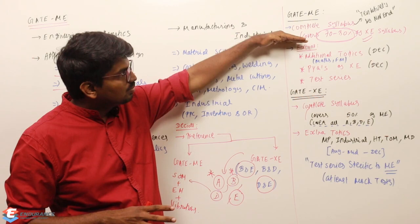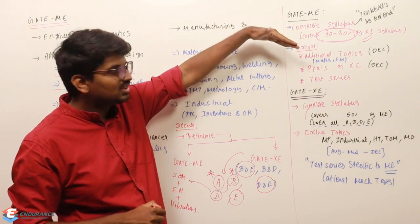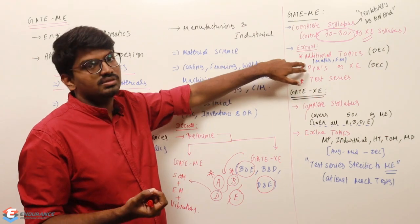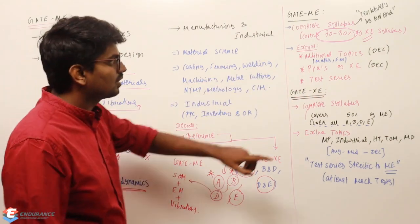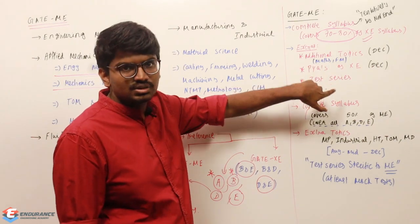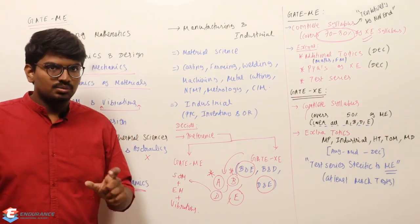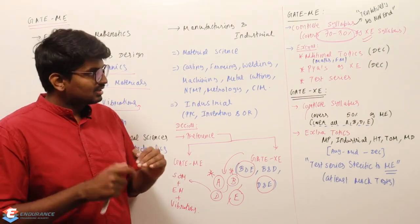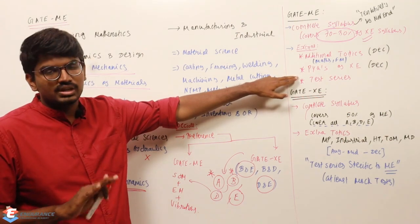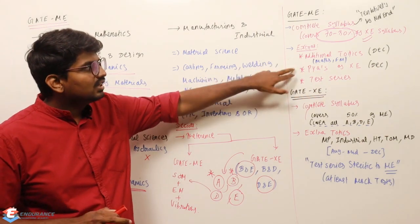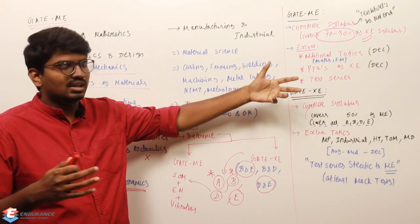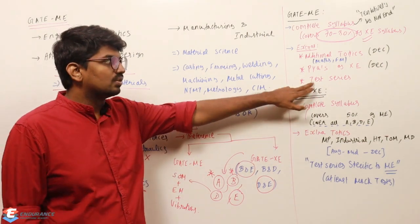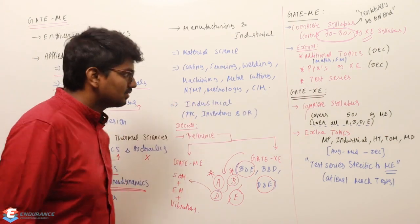After completing ME by November end, in December focus on the additional topics of GATE XC. If you are planning to write the fluid mechanics paper, there are more additional topics in FM and mathematics to concentrate on, plus a few thermodynamics topics. The level of questions in XC is a little higher than ME, so practice previous year XC questions properly. Dedicate around 20 to 30 days in December for this — it depends on how you have prepared. Test series is a must whether you are going for ME or XC.